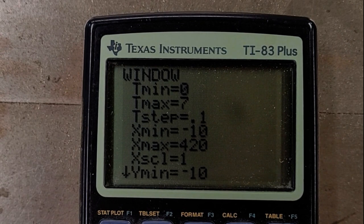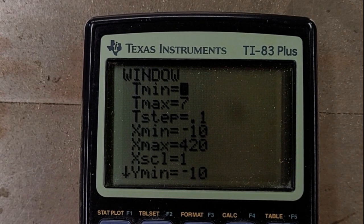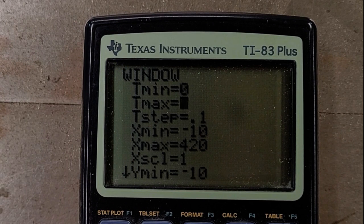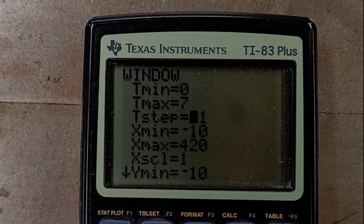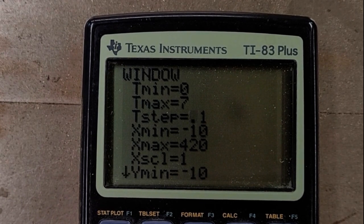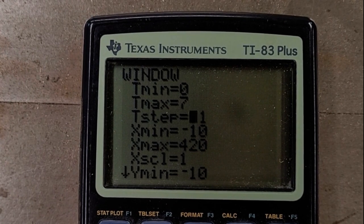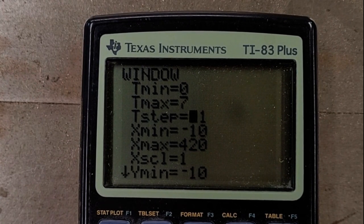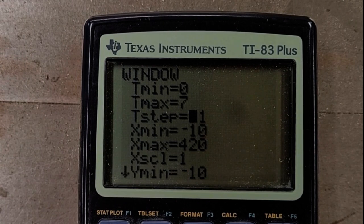If you've not messed around with the window yet, let's take a closer look. Here we've got the t min and max. Now students, that would be like the times that I want to investigate. How did I know to go to seven seconds? Well, it's just kind of a guess. I don't think the ball is going to be in the air more than seven seconds, but that's what those values represent. Again, it's like the time.